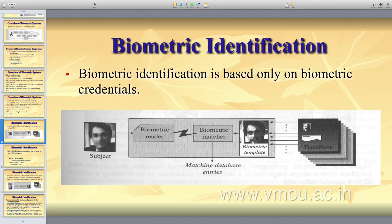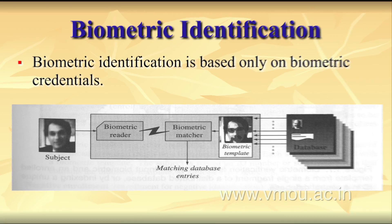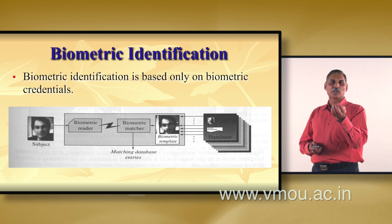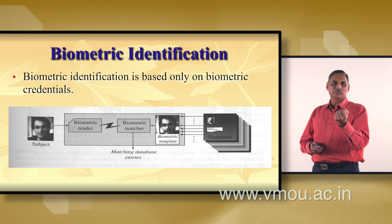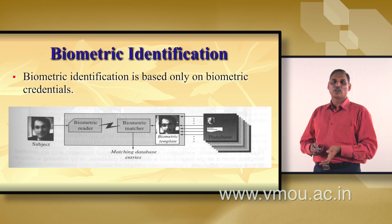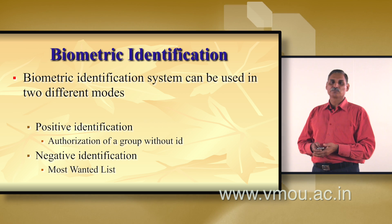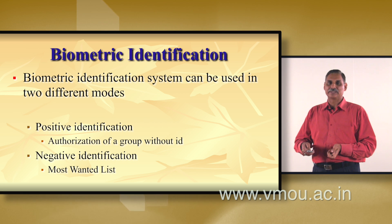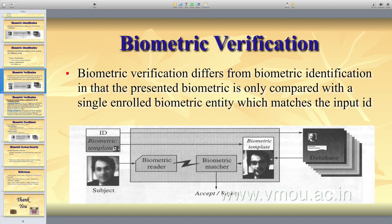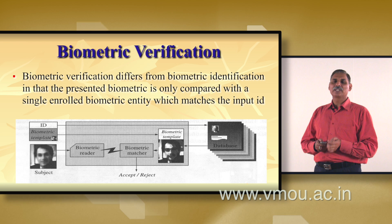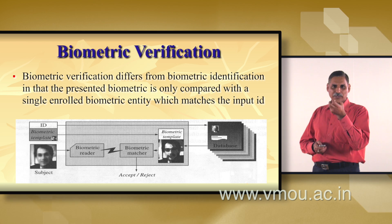Biometric identification is based only on biometric credentials — no password, PIN, or phrase needs to be remembered. The subject is given to the biometric reader, features are extracted and given to the biometric matcher, and based on features available in the database, the person is identified as genuine or impostor. The system can operate in two modes: positive identification (authorizing a group without an ID) and negative identification (a most-wanted list). Biometric verification differs in that the presented biometric is compared only with the single biometric entity matching the input ID — a one-to-one match.